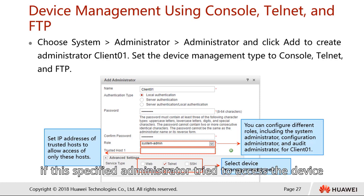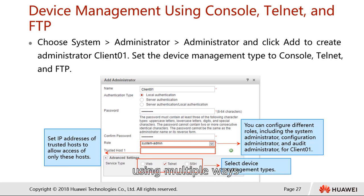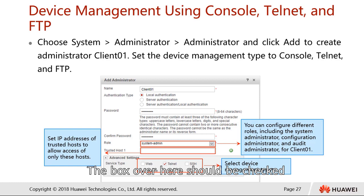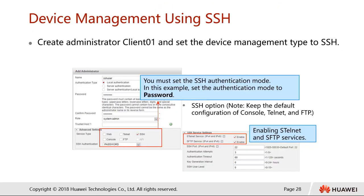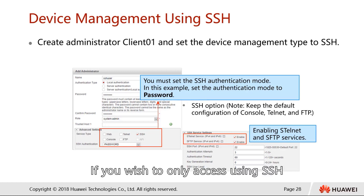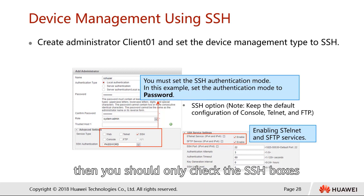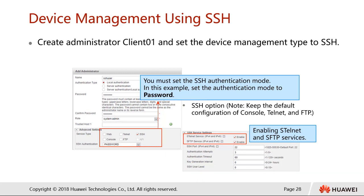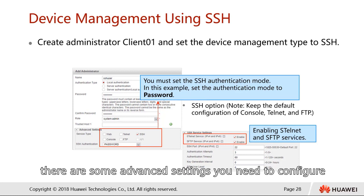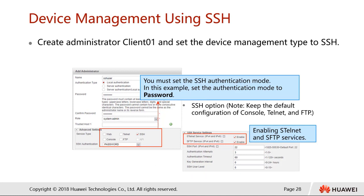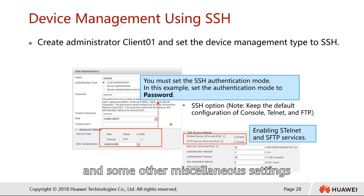If the specified administrator tries to access the device using multiple methods — web, telnet, SSH, console, FTP — the corresponding boxes should be checked. If you wish to only access using SSH, then you should only check the SSH box. Once you check the SSH box, there are advanced settings to configure, including enabling the SSH services, the secure FTP services, the port number, and some other miscellaneous settings.